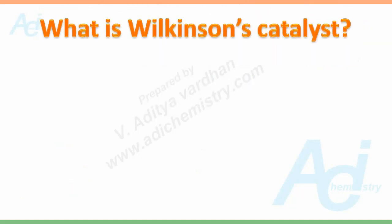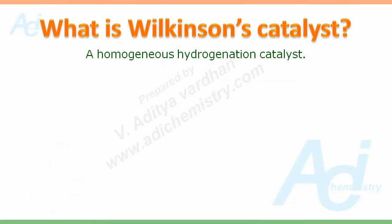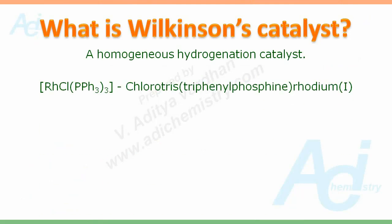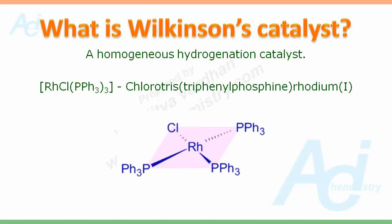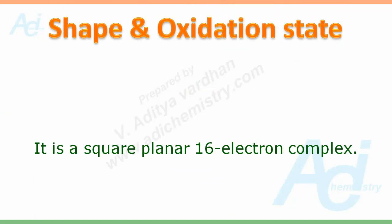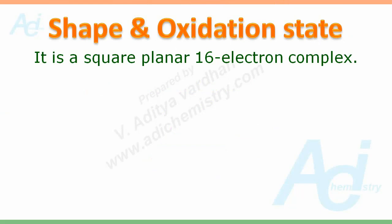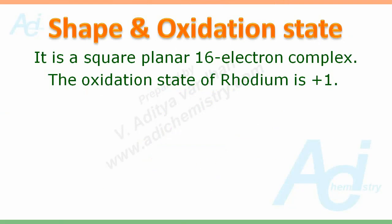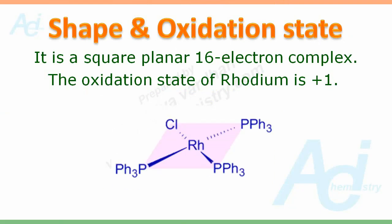So first of all, what is Wilkinson's Catalyst? It is a homogeneous hydrogenation catalyst represented by RhCl(PPh3)3. Its IUPAC name is chlorotris(triphenylphosphine)rhodium(I). It is a square planar 16-electron complex, and the oxidation state of rhodium is +1.